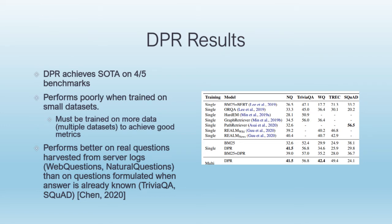Dense passage retrieval has achieved state-of-the-art on several open domain question answering benchmarks. However, it does not perform well on benchmarks with relatively small datasets and requires additional training with other benchmark datasets to perform well. Dense passage retrieval also performs better on real questions harvested from search engines than from questions formulated by trivia experts. I consider this to be a feature, not a bug, because in real-world systems, it will be real-world users asking real-world questions and not trivia experts trying to trick the system.